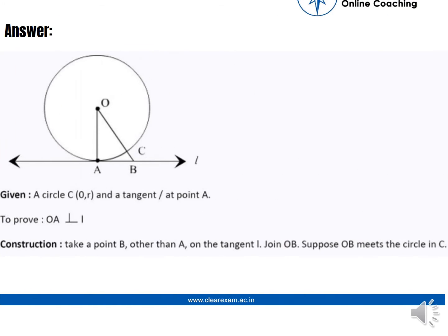We have a circle C with center O and radius R, and a tangent line L at point A on the circle. OA is the radius to the point of contact. We need to prove that OA is perpendicular to the tangent line L.